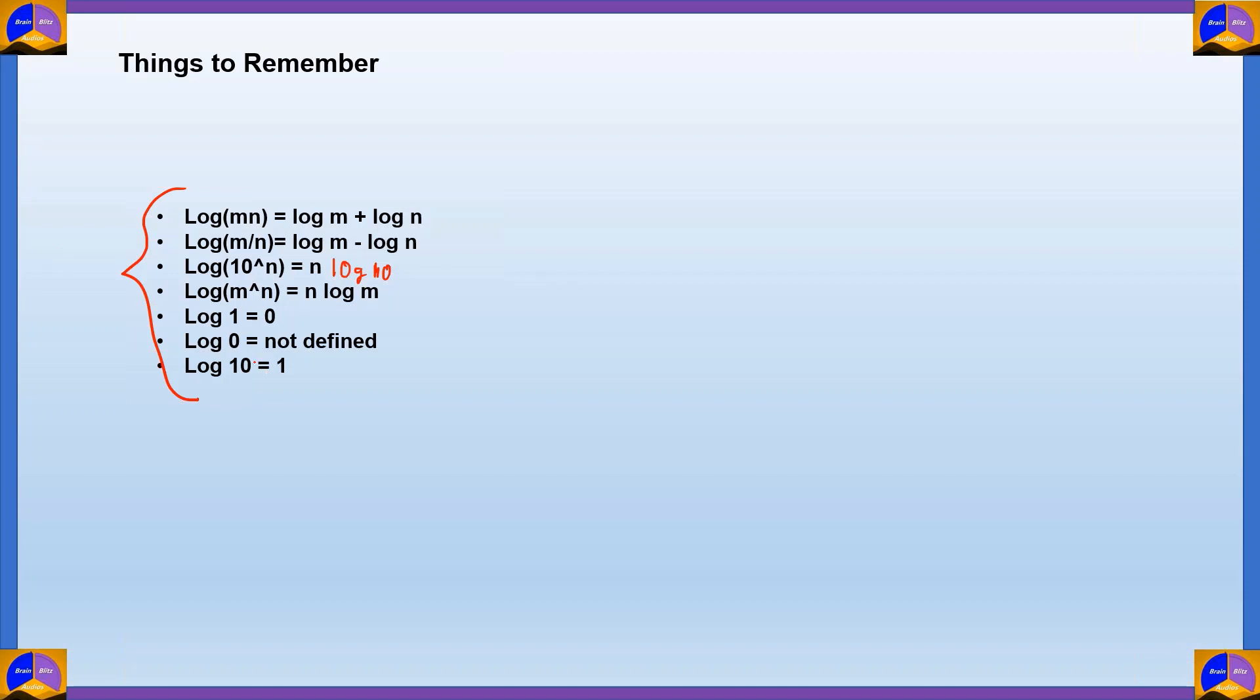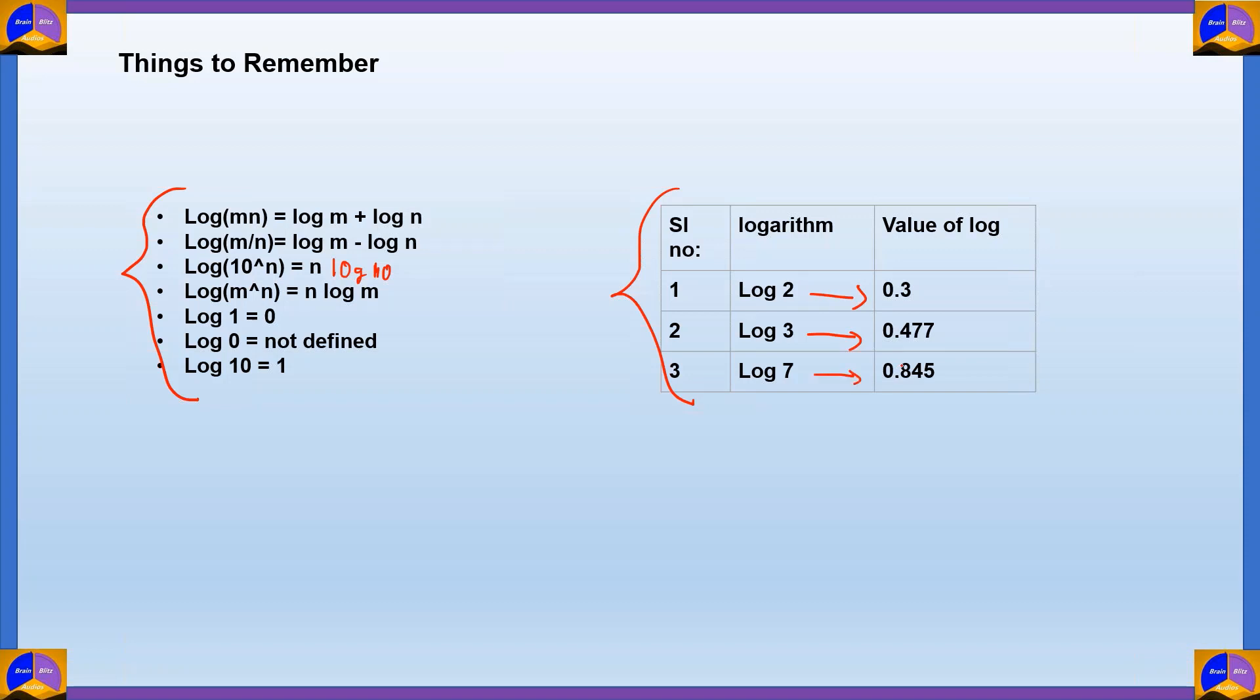These are stuff that you learn when you first study logarithms at school. Now, I need you to associate the three values that you want to learn. And when you learn these three values and apply the common sense and the tricks that I gave you, you'll be sure to get any answer for a logarithm problem. Let's review them. Log 2 is 0.3. Log 3 is 0.477. Log 7 is 0.845. The beauty of logarithms is that it gives us high accuracy computations very easily.